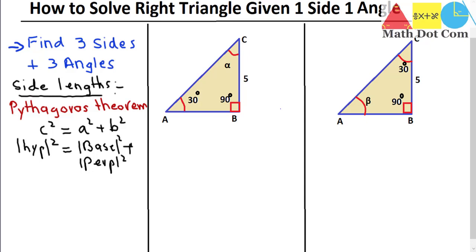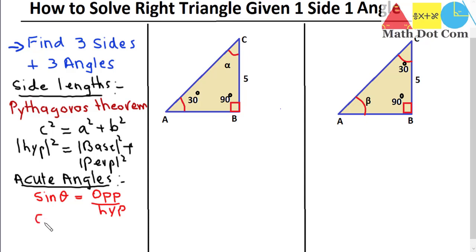For finding the acute angles of the right triangle — and they are acute because if one angle is 90 degrees, all remaining angles will be less than 90 — we use trigonometric ratios. Sin θ = opposite side / hypotenuse. Cos θ = adjacent side / hypotenuse. Tan θ = opposite side / adjacent side. These three trigonometric ratios are used to solve the right triangle, finding both sides and angles.